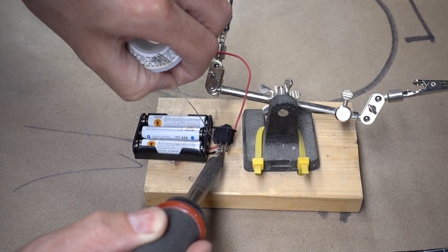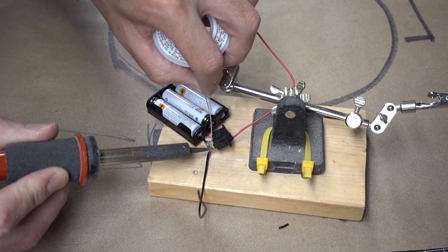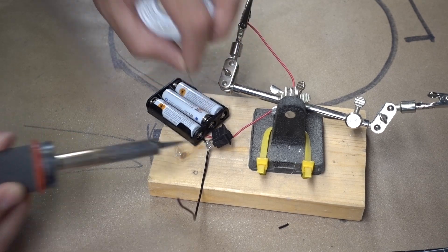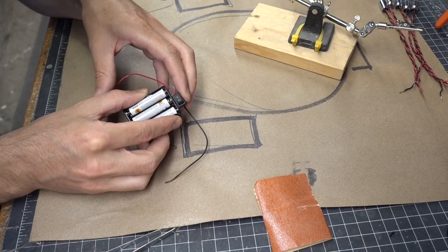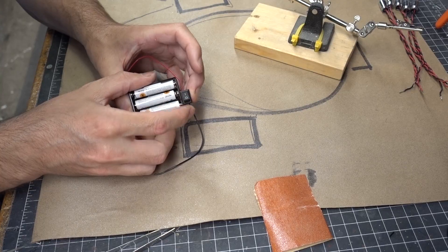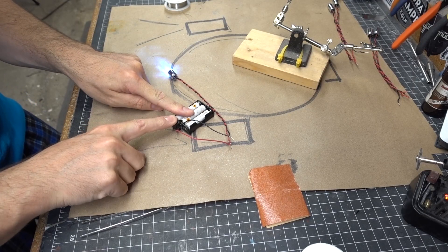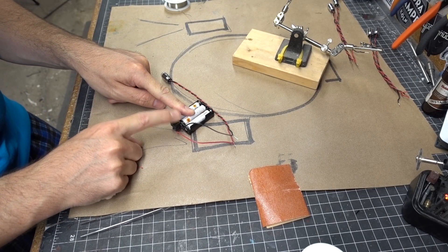Since my battery holder didn't have its own switch, I soldered in my own switch on one of the leads. This was then hot glued onto the battery holder. Also at this point I figured it was a good idea to test my circuit to make sure all of my soldering points were nice and secure.